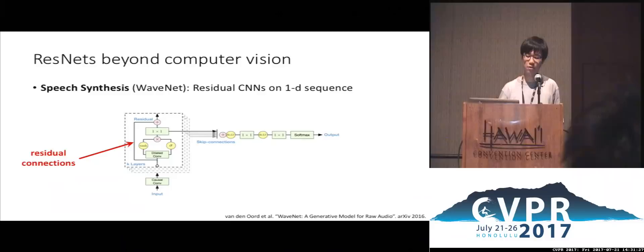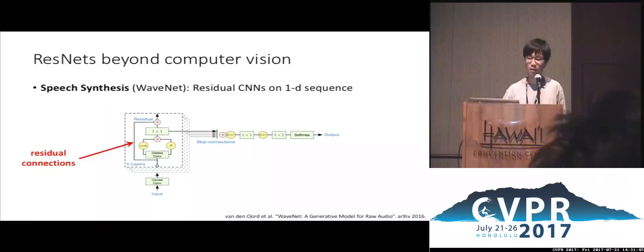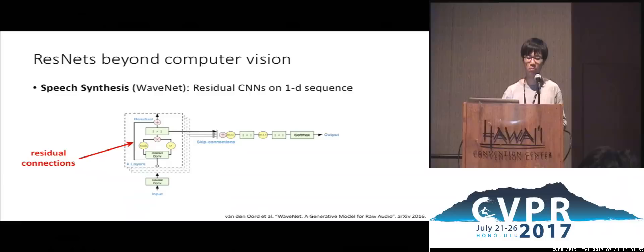ResNet has also been used for speech synthesis. In WaveNet, a residual convolutional network is constructed on a 1D sequence. Unlike many works that use recurrent networks or LSTMs for sequence-to-sequence learning, this work uses a ConvNet. The key design uses dilations to capture long-term dependency, and by stacking many such layers they achieve a very large receptive field. The residual connections are key to their success in stacking many layers.